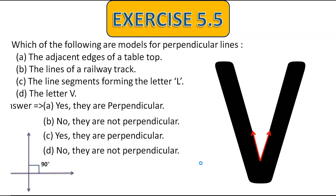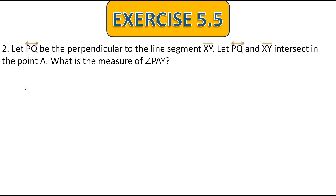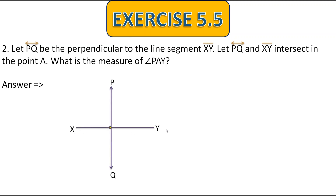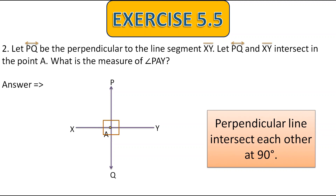Now let's move to the second question. Let PQ be the perpendicular to the line segment XY, and let PQ and XY intersect at point A. What is the measure of angle PAY? The line PQ is intersecting at XY and it is perpendicular. Perpendicular lines intersect each other at 90 degrees, as you all know. Therefore, the angle PAY is equal to 90 degrees.